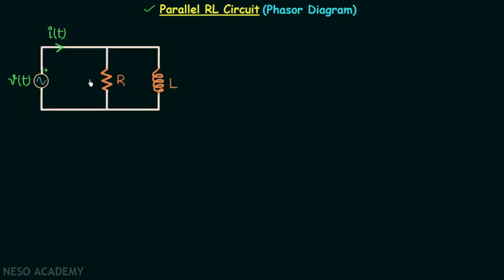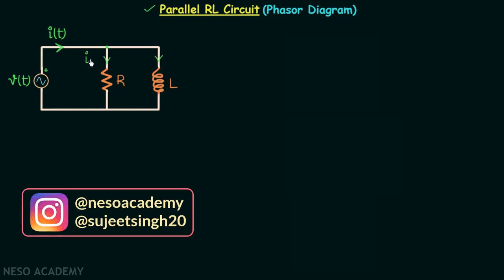Here I have taken the parallel RL circuit. The resistor and inductor are connected in parallel, and they are in parallel because they have the same voltage VT across their terminals. The total current IIT is getting divided at this node into the currents IR and IL, where IR is the current through the resistor and IL is the current through the inductor.